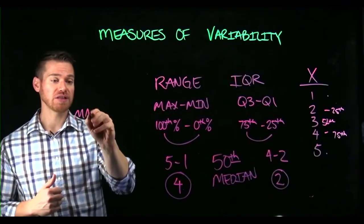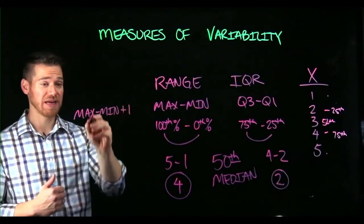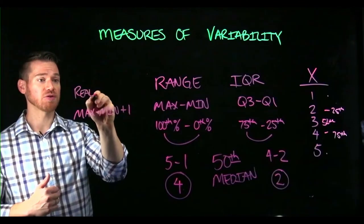The real range is the one where you take max minus min and add one to account for the real limits on data. And so I refer to this as the real range.